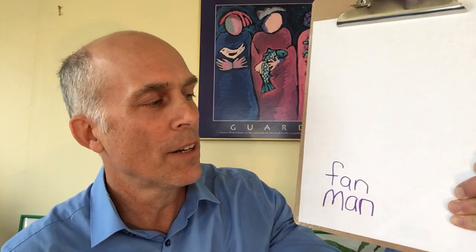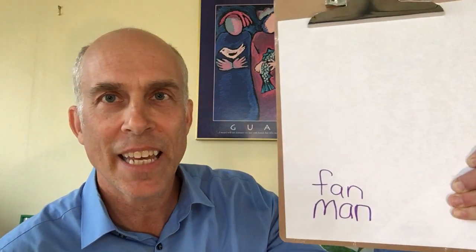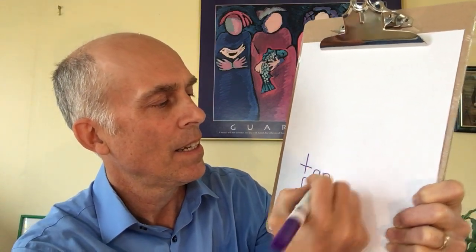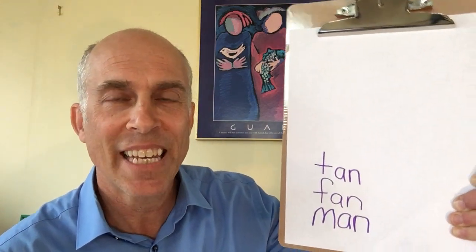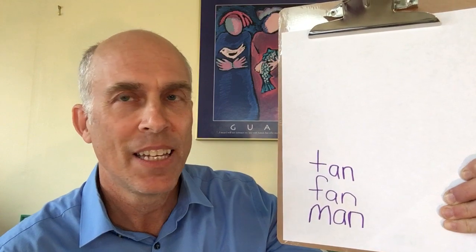Now change one letter and turn fan into tan. Now change the vowel and turn tan into ten.